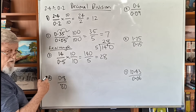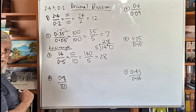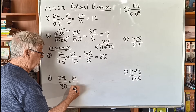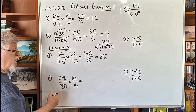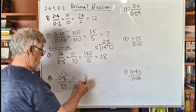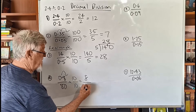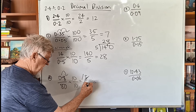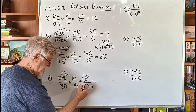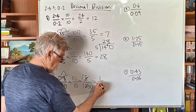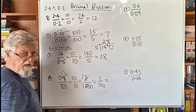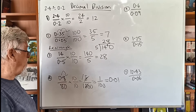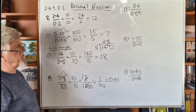Now the decimal is on the numerator instead of the denominator — 0.8 divided by 80. Multiply top and bottom by 10: top becomes 8, bottom becomes 800. That's 8 over 800. 8 into 8 goes once, 8 into 100 — you're left with 1 over 100. Written as a decimal, two zeros means 0.01.